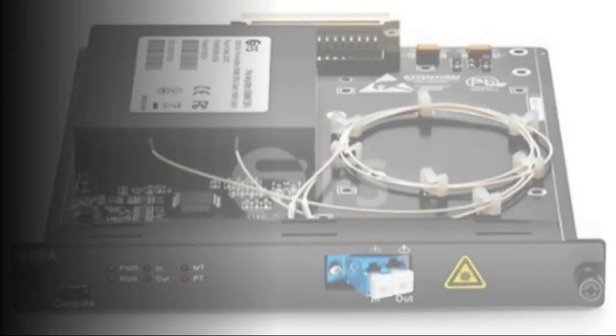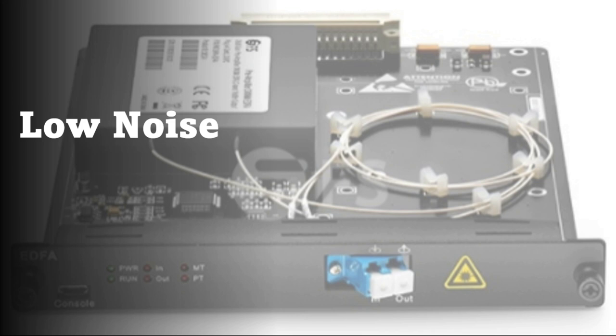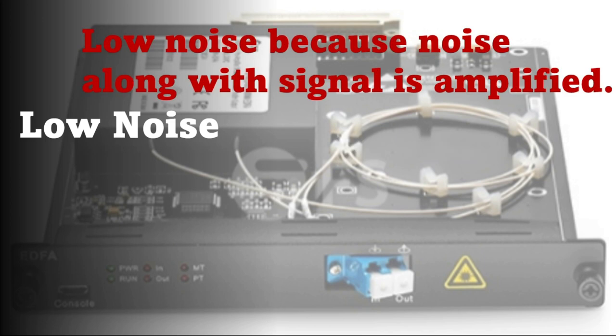The target parameters when selecting an EDFA are low noise and flat gain. Gain should be flat because all signals must be amplified uniformly. Low noise is a requirement because noise along with signal is amplified. Because this effect is cumulative and cannot be filtered out.